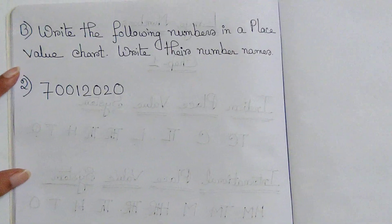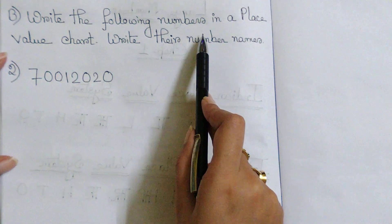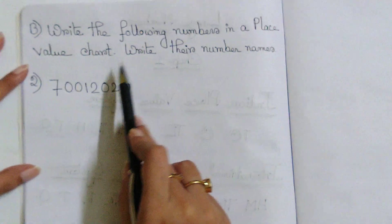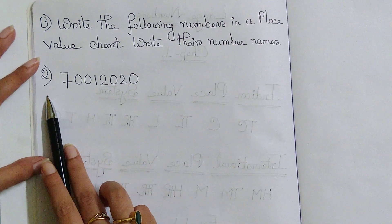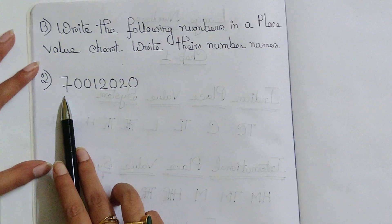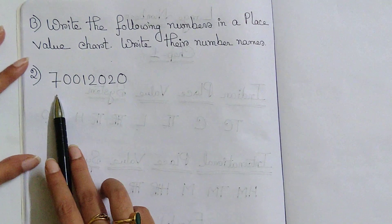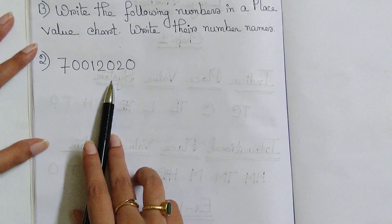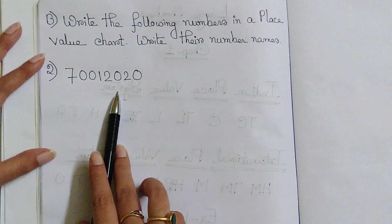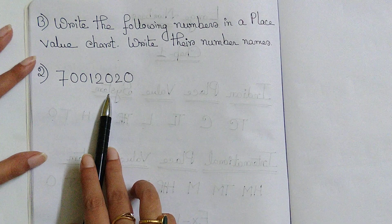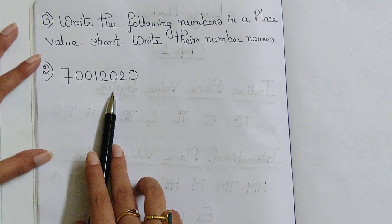Let's come to sum number B: write the following numbers in a place value chart and write their number names. We are going to solve sum number 2. The number given is 70,012,020. Since it has not been mentioned whether to use Indian or international place value system, I can do it in either. So let's do it in the Indian place value system. First I will place the commas: after 3 digits, then comma.